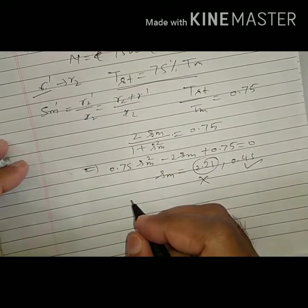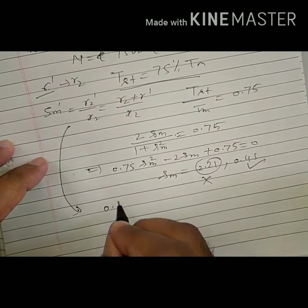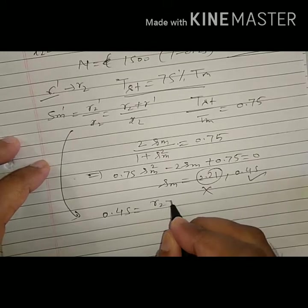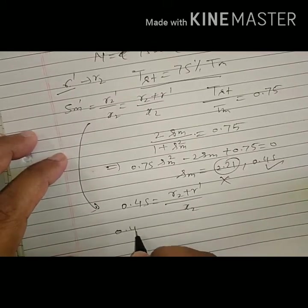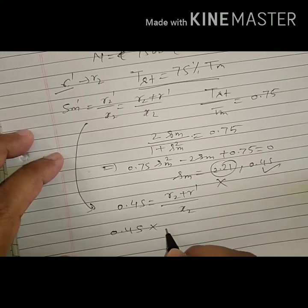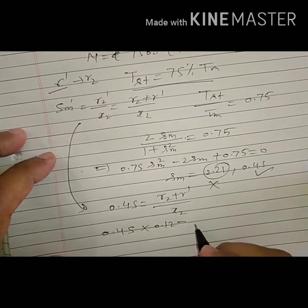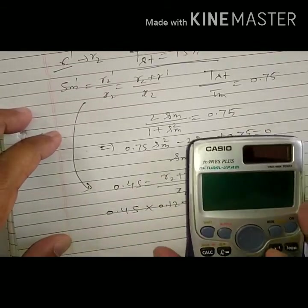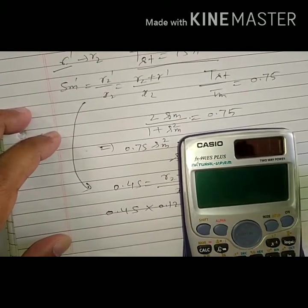Two values. That is quite clear, for induction motor slip cannot be more than one, so this value is neglected. SM we got as 0.45. Therefore using this I can write 0.45 equal to r2 plus r dash by x2, or 0.45 times x2, which is 0.12, minus r2, which is 0.03, equal to external resistance.